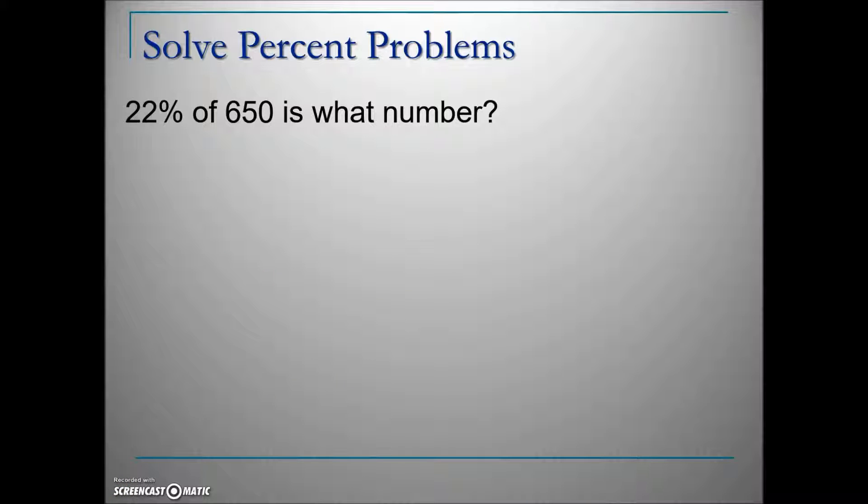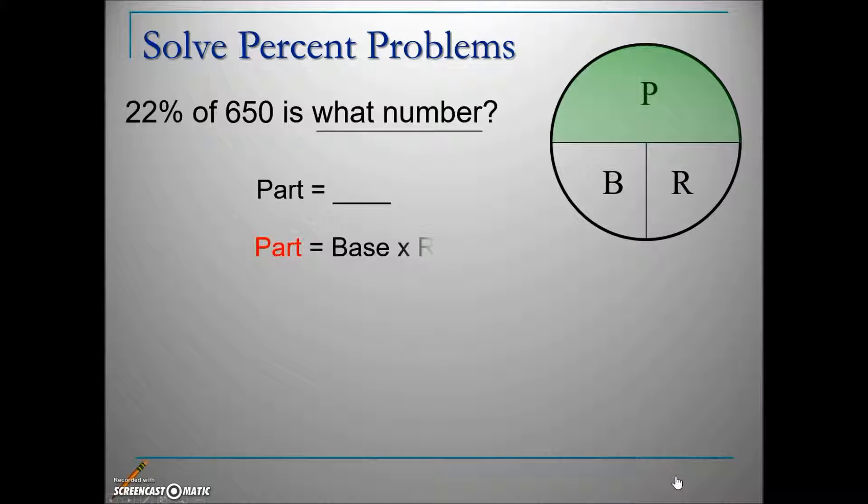One more generic percent problem: 22% of 650 is what number? Using our hints, we're given the rate. The number following 'of' is the base, so we're looking for the part. To solve for part, cover it up—that leaves B next to R. Multiply those values. Convert the percentage to its decimal equivalent and multiply. The part is 143.